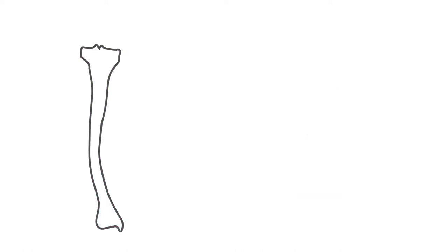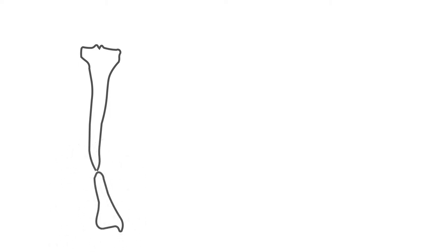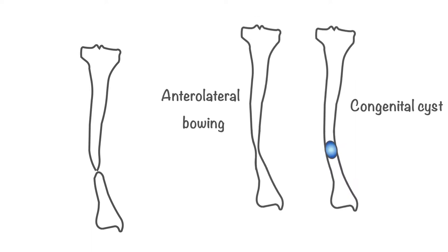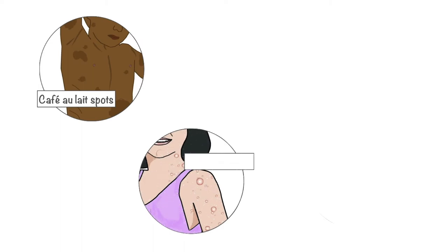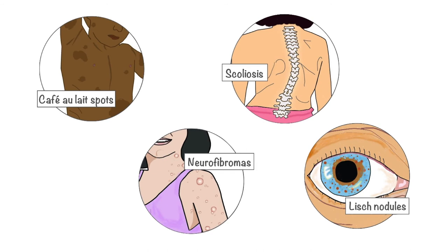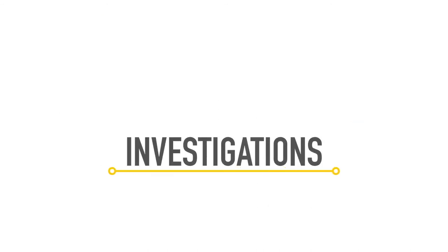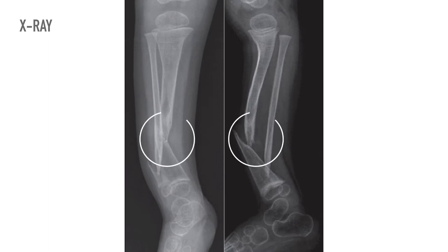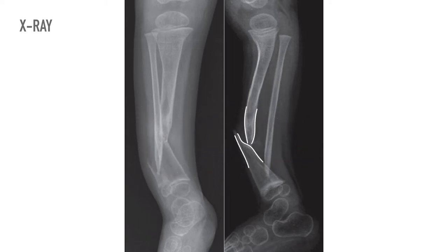Congenital anterolateral bowing of the tibia, when complicated by fracture through the weakened shaft, results in a pseudoarthrosis. Congenital bowing and congenital cysts of tibia are popularly called pseudoarthrosis lesions. Approximately 40% of patients present with lesions typical of neurofibromatosis or von Recklinghausen's disease. X-rays of typical pseudoarthrosis show absence of bone formation in the tibia at the junction of middle and distal thirds, with varying degrees of diaphysial tapering.